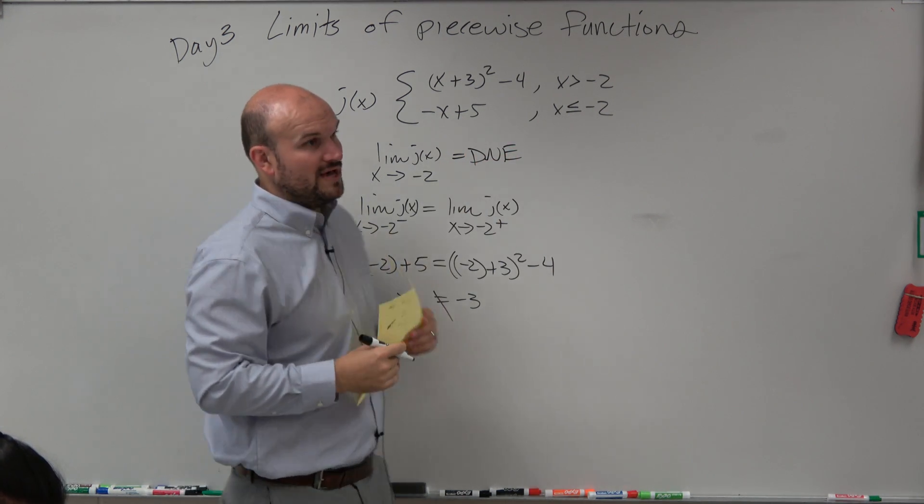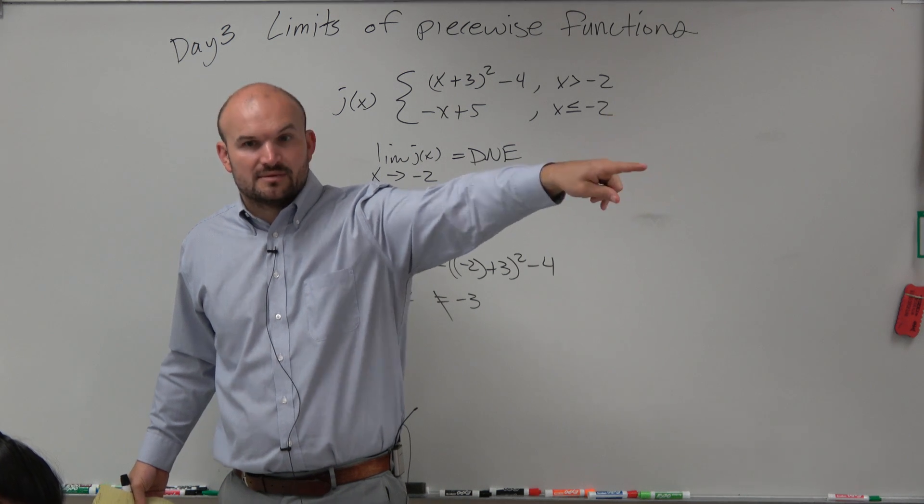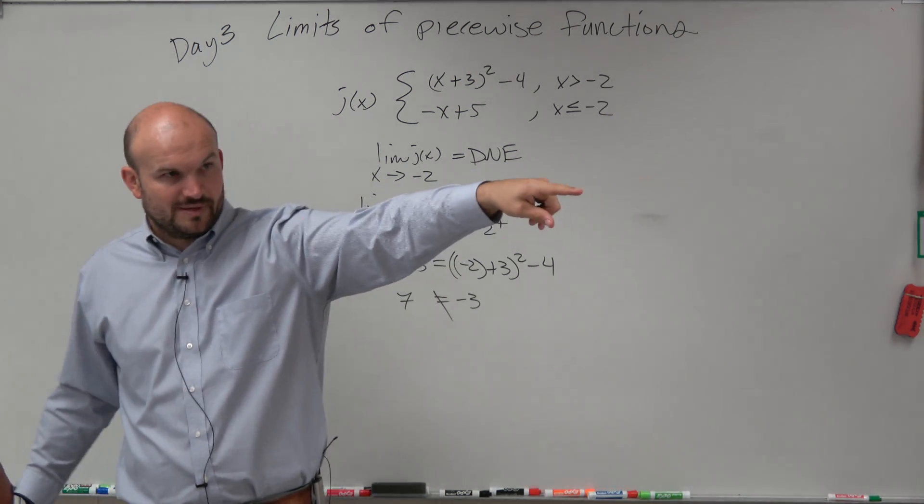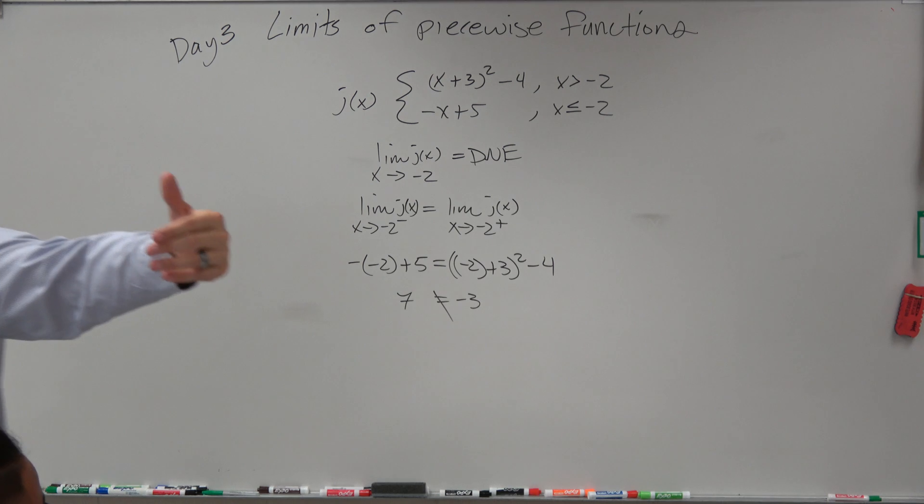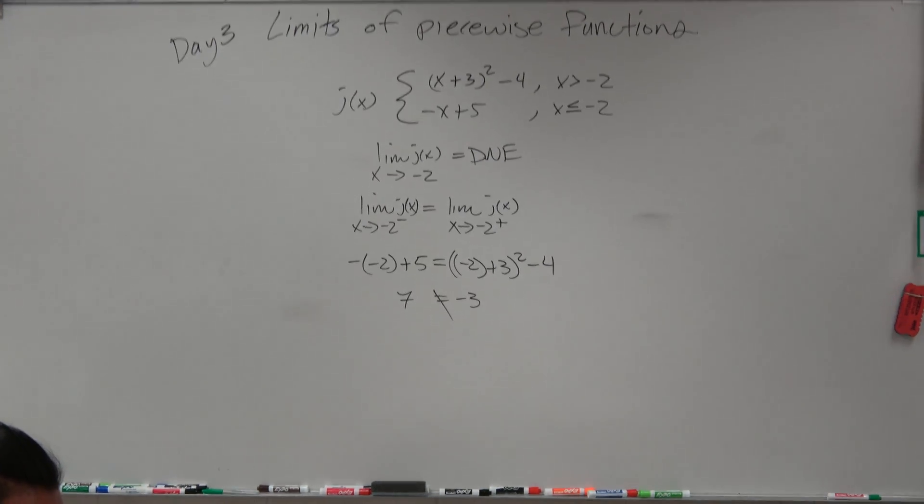Since they're not equal, we know that we have a jump discontinuity. You guys agree with me? Does that kind of make sense? So when you have the left and the right limit are equal to each other, you know they're approaching the same.